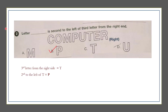Question number 2: A letter blank is second to the left of the third letter from the right hand. The third letter from the right is T. Now we have to find second to the left of T, which gives us P. So our answer is P, which is option B.